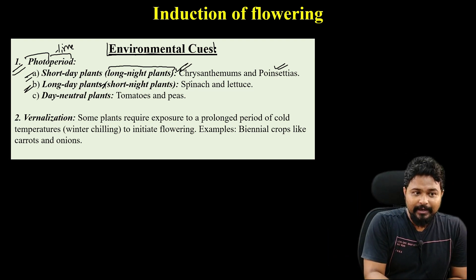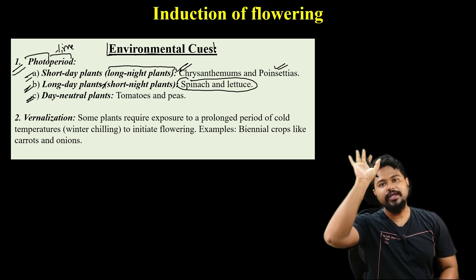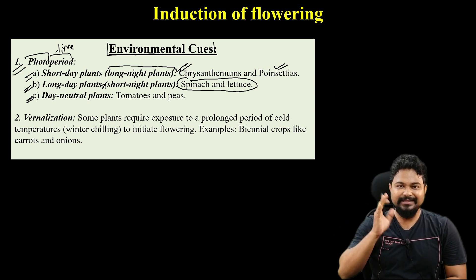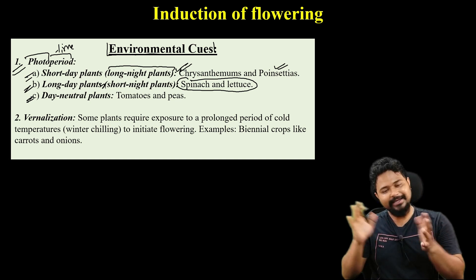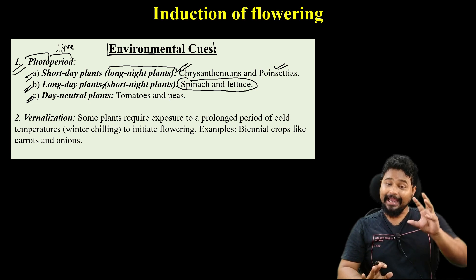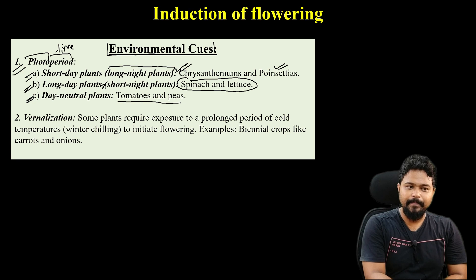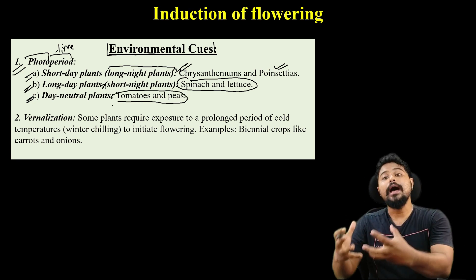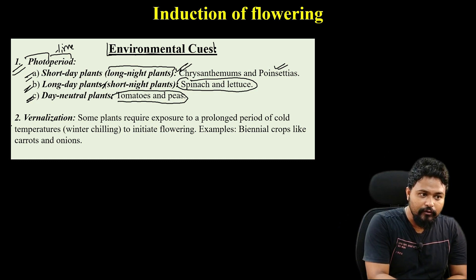Day-neutral plants flower regardless of photoperiod — it doesn't matter how many hours of daily light or night they receive. Examples of day-neutral plants include tomatoes and poppies. So this is photoperiod, and photoperiod affects and controls flowering in plants.